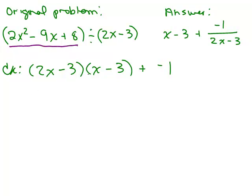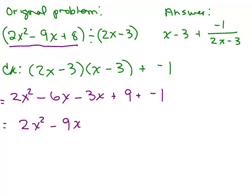So we've got 2x times x, 2x squared, outer is minus 6x, inner minus 3x, last plus 9 plus negative 1. And that is 2x squared minus 9x plus 8, yahoo. So this is the correct answer.